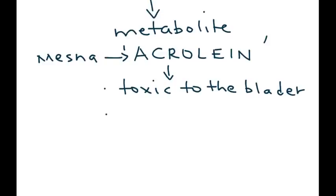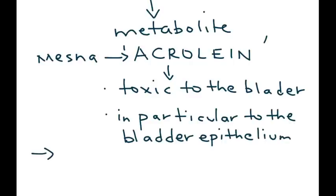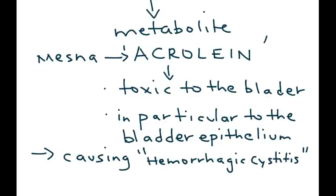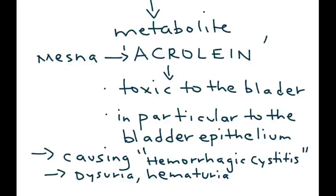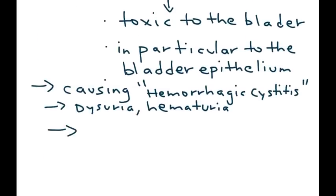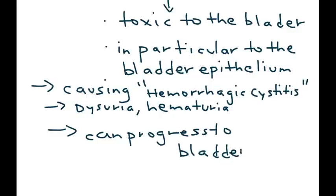If the person was given the cancer drug without mesna, acrolein would cause toxicity to the bladder, in particular to the bladder epithelium. This causes a condition known as hemorrhagic cystitis. Hemorrhagic cystitis can present in a patient as dysuria — pain during urination — and hematuria, blood in the urine. It can also progress to bladder cancer. Hemorrhagic cystitis is therefore a very serious side effect of using certain cancer drugs like cyclophosphamide.